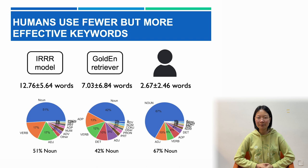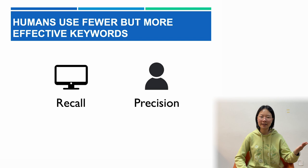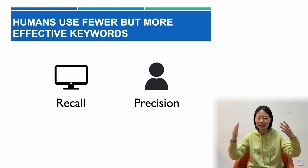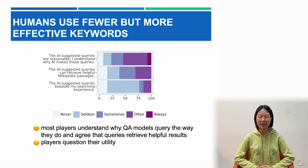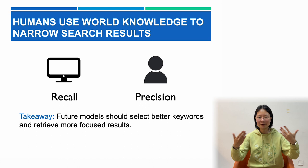For example, humans select the entity most likely to have a comprehensive Wikipedia page, which requires world knowledge. In contrast to a human's desire for precision — a direct hit with two to three search results — models prefer recall with as many keywords as possible, hoping to retrieve something useful, since they don't mind reading through a dozen search results. Although most players understand why QA models query the way they do and agree that the queries retrieve helpful results, players question their utility. Our takeaway is that future models should select better keywords and retrieve more focused results.